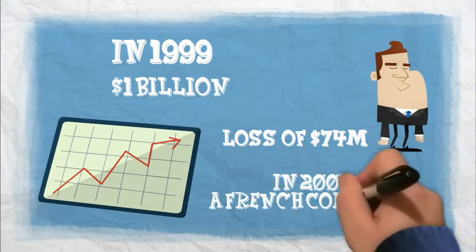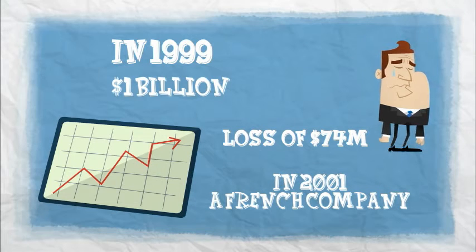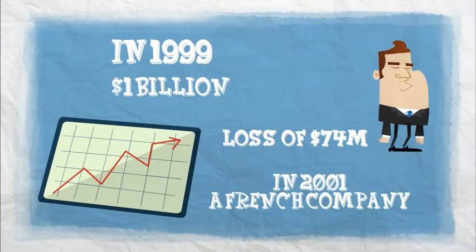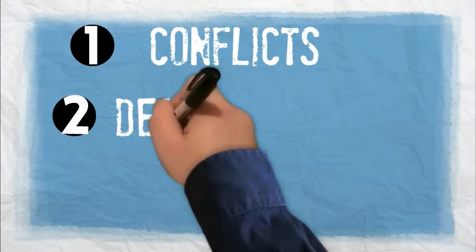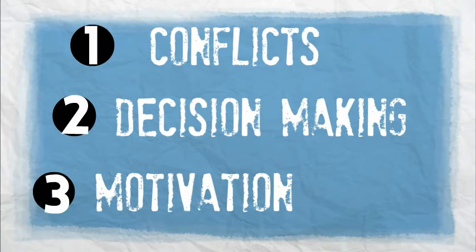In 2001, Hasbro sold Hasbro Interactive to a French company. We will analyze three main issues involved: conflict issues, decision-making issues, and motivation issues.